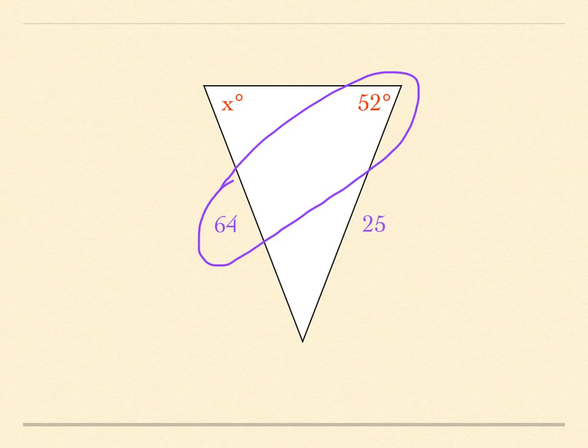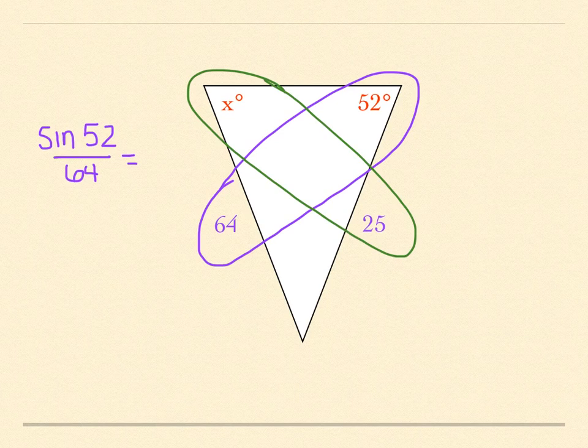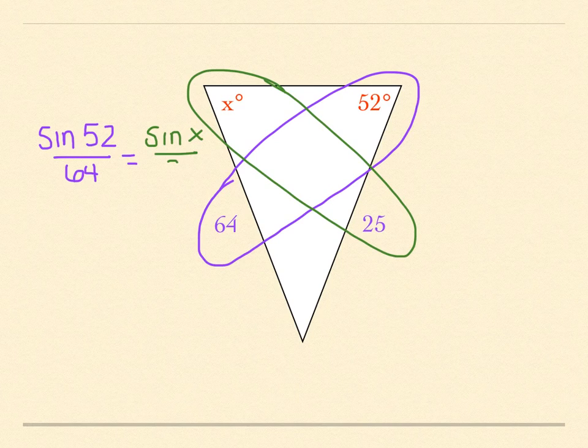So if I was going to set this one up, because I do have that pairing here, I would say sine 52 over 64 equals, and then I would go for this pair here, except in this one the X is your variable. And that's a little different than the last one we did. So this would be sine of X over 25.